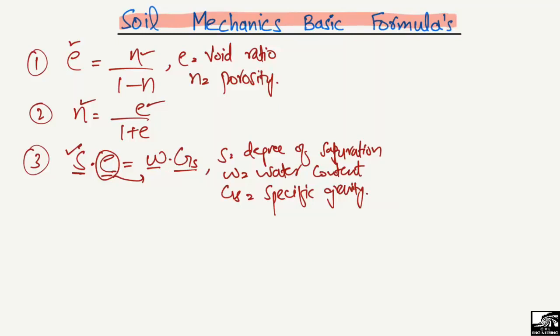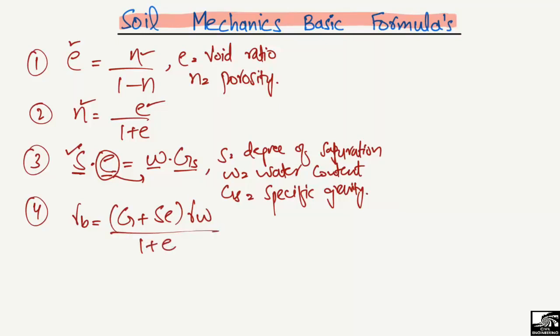The fourth formula is the bulk unit weight: γ_bulk = (Gs + S·e)·γw / (1+e). Here Gs is the specific gravity, S is the degree of saturation, e is the void ratio, and γw is the unit weight of water, which is fixed at 9.81 kN/m³. You should remember this value. By putting in these values, you can find out the bulk unit weight of the soil.